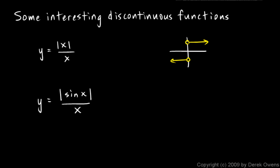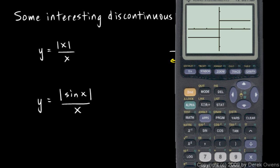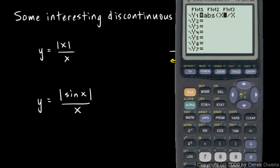Similar thing on this second function here, the absolute value of sine x over x. But we get an oscillation this time. Let's plot this. So we have the absolute value of sine of x. And then I'll close parentheses on the sine x and close parentheses on the absolute value. So that's absolute value of sine x divided by x.